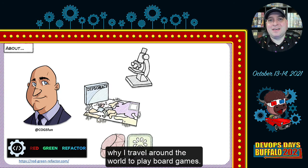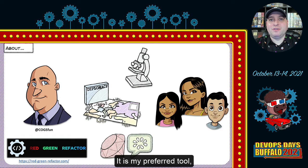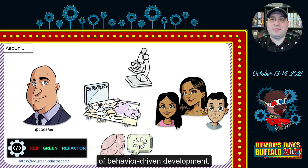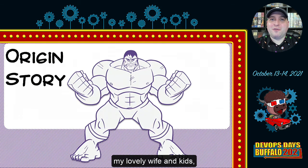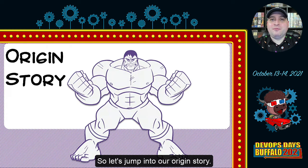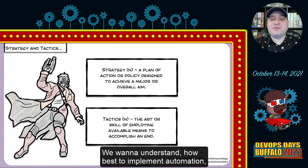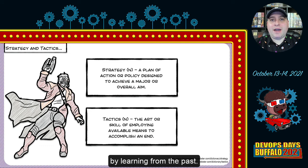I'm also an evangelist for Ruby Cucumber — it is my preferred tool to help assist in the implementation of behavior-driven development. I also want to give thanks to my family, my lovely wife and kids, who are remaining quiet during this recording. So let's jump into our origin story — we want to understand how best to implement automation by learning from the past.